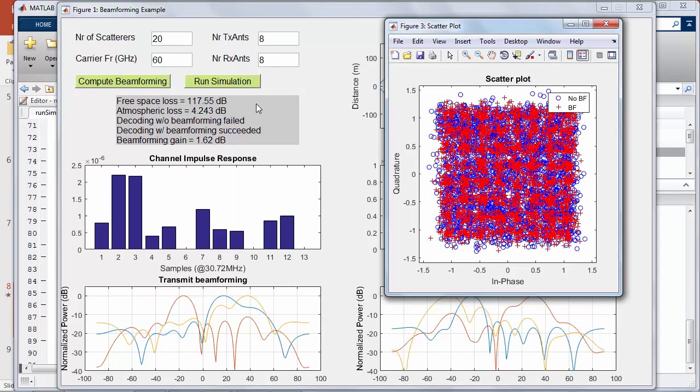Let's switch to a rich channel signal, with 20 scatterers and a 60 GHz carrier frequency. Now the free space loss has increased a lot, and we also observe atmospheric loss due to the absorption at that frequency, about 15 dB per kilometer. We can see that the scatter diagram is much worse. The beamforming gain is reduced because there is less of a clear direction to target, but beamforming is enough to make decoding succeed while it breaks without beamforming.